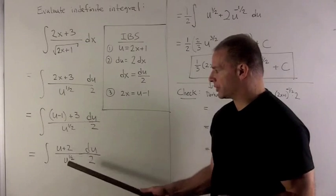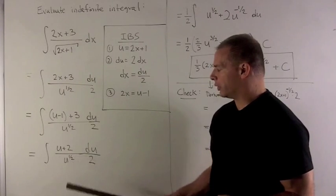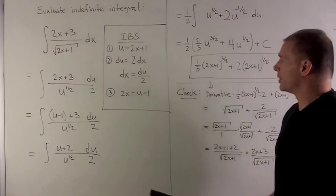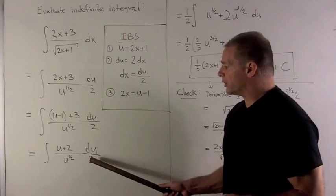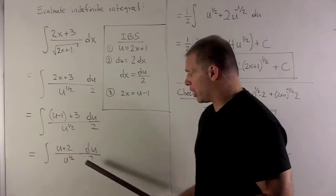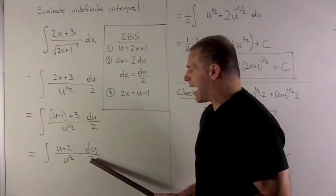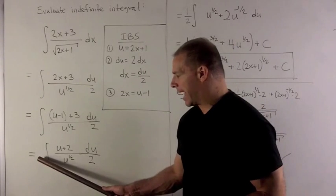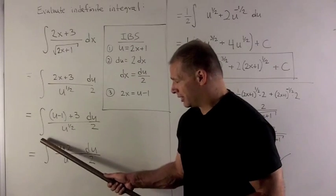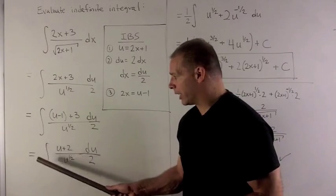The top becomes u plus 2 over u to the 1 half, then we have du over 2. If I want to simplify, first note the 2 comes out as 1 half, not as 2, because this is in the bottom. It has to stay on the bottom when we pull it out. There's a hidden 1 sitting in the top here, so we're going to have 1 half.